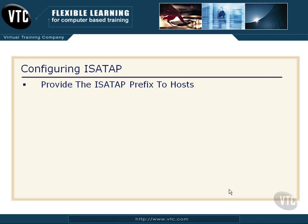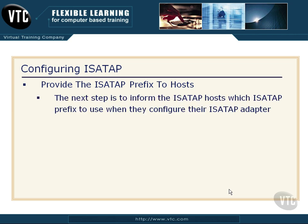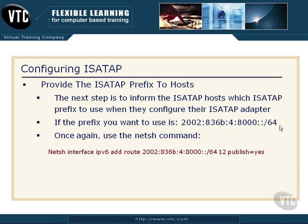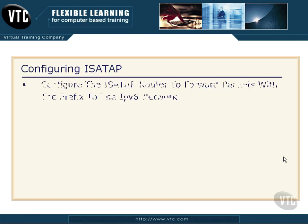Our second command: we need to provide the ISATAP prefix to our hosts. This informs the ISATAP hosts which prefix to use when they configure their own ISATAP adapter. If the prefix I want to use is 2002:836B4:8000, using 64 bits as our network ID, then I'll use the netsh command: net sh interface IPv6 add route, give it the prefix I want, the interface ID, and publish equals yes. At that point I have published the prefix.